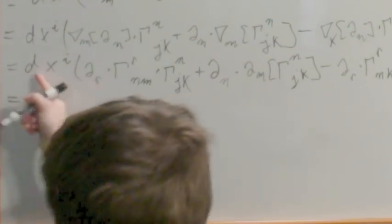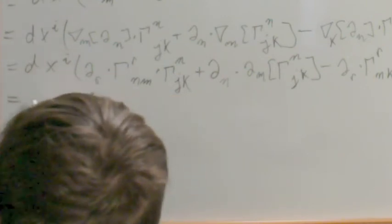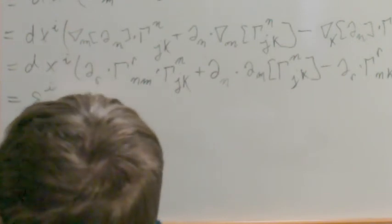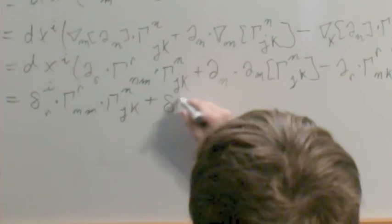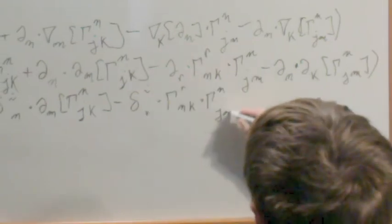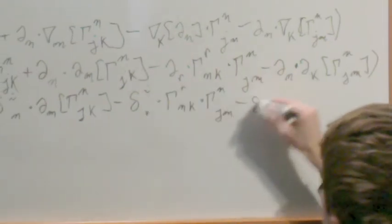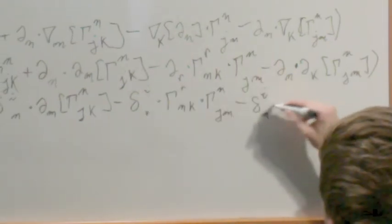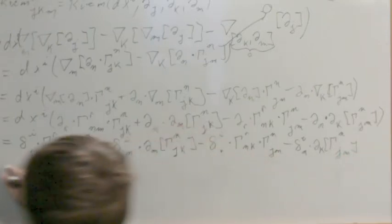And then we apply this to all of those, so that I get delta I, R right there, delta I, N, delta I, R, then right here I get delta I, N.